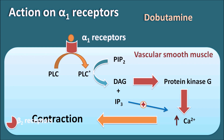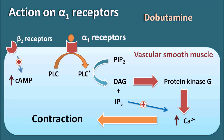Dobutamine can also act on the beta-2 receptors, which are also present on the vascular smooth muscle. When these beta-2 receptors are activated, they increase cyclic AMP, which has a quite opposite role to calcium and inhibits contraction, resulting in vasodilatation. Because of its action on both alpha-1 and beta-2 receptors, the effect of Dobutamine on blood pressure is not significant at low doses. But at a high dose, Dobutamine can increase the rate of contraction, which may result in a slight increase in blood pressure.